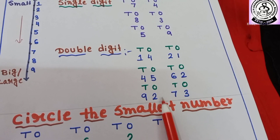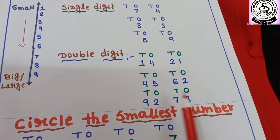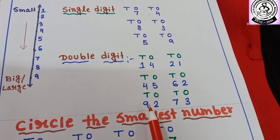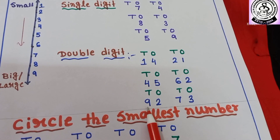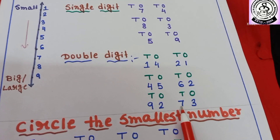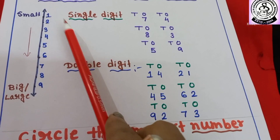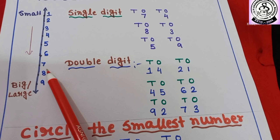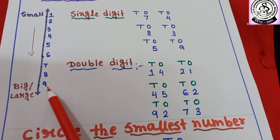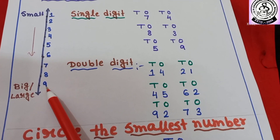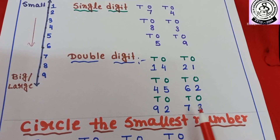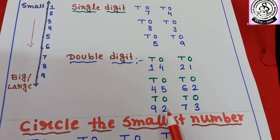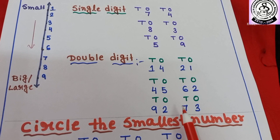Then here I have written 92 and 73. You have to compare first digit numbers. Here first digit is 9 and here 7. Counting: 1, 2, 3, 4, 5, 6, 7, then 8, then 9. That means 73 is smaller than 92. So you have to circle it.